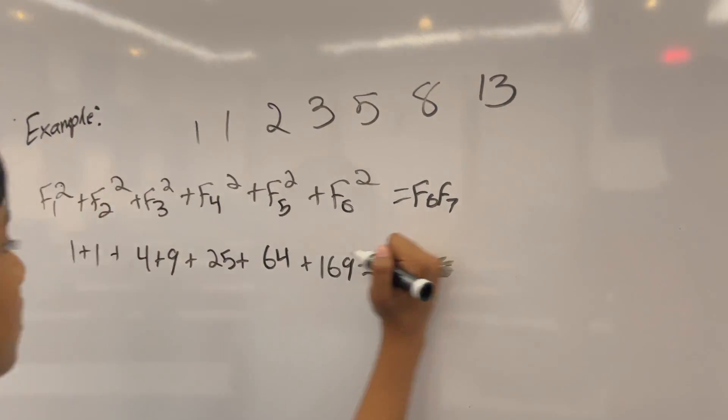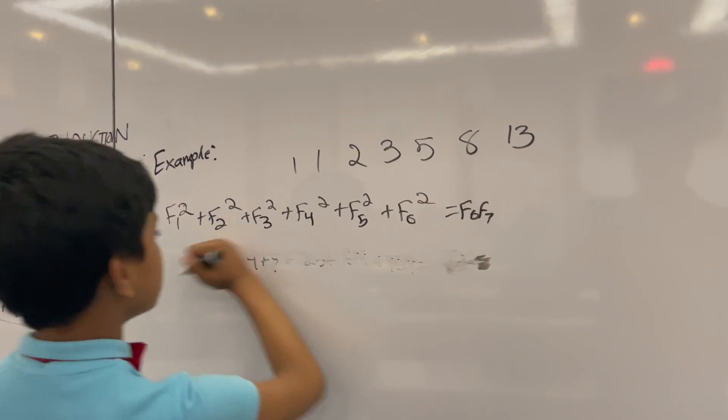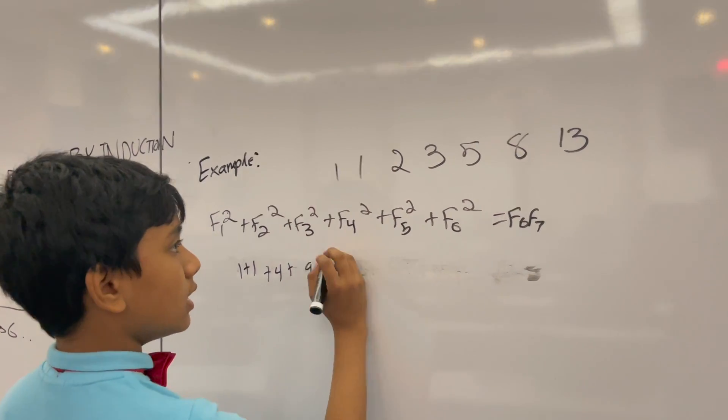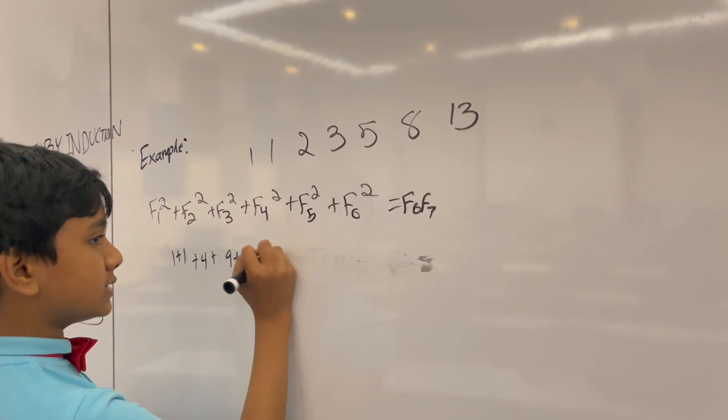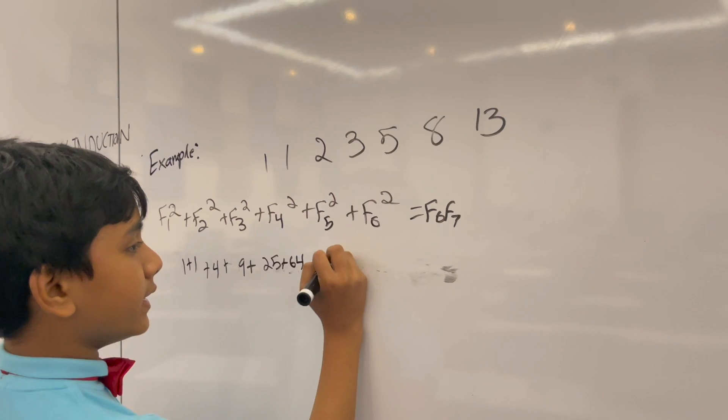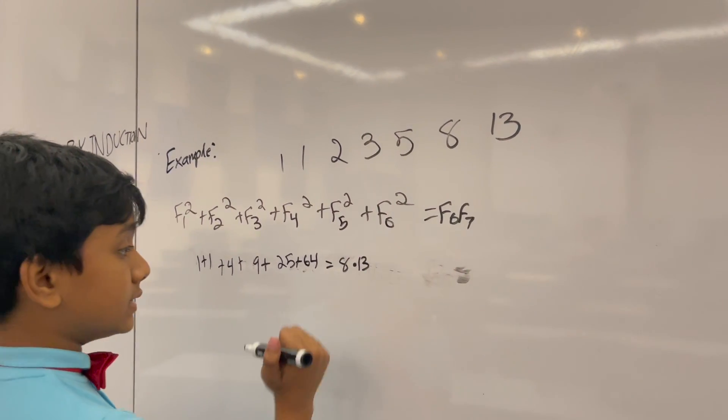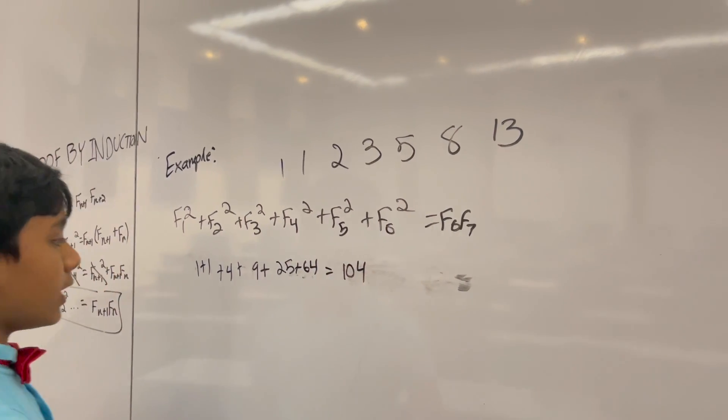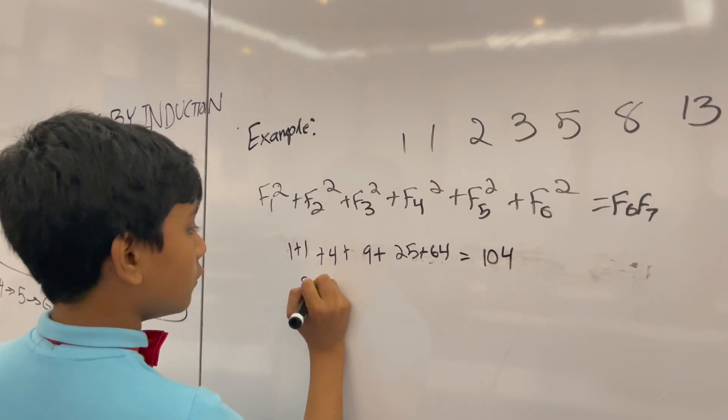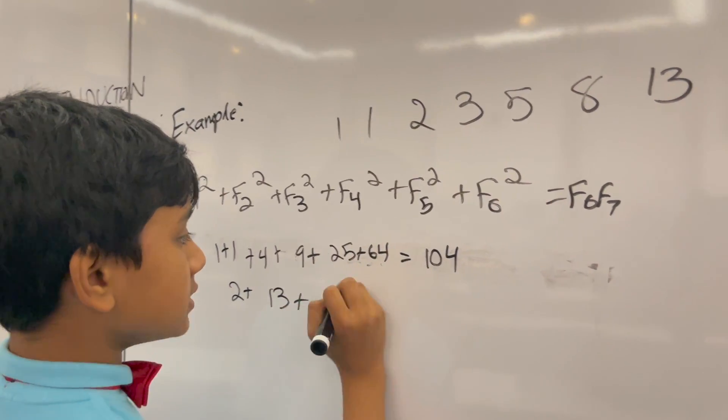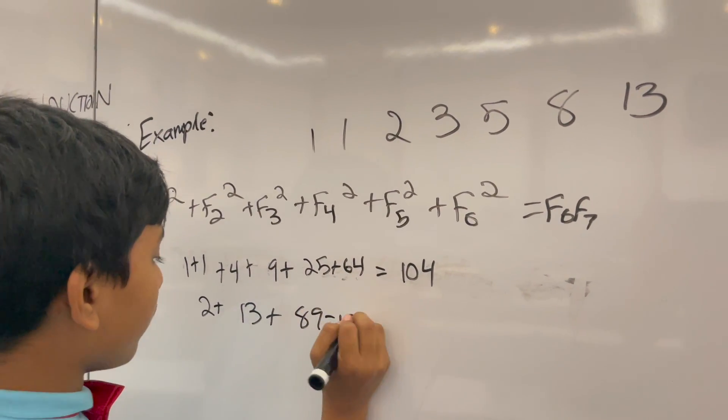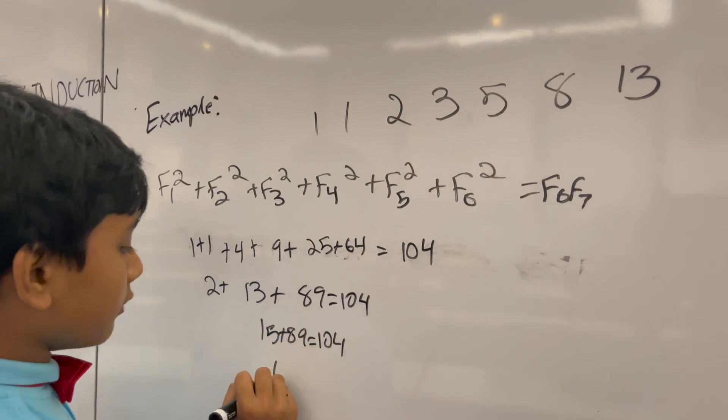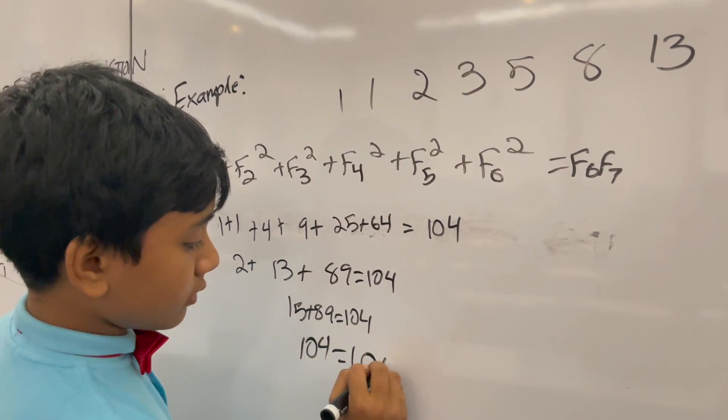Wait, no. I think I skipped something. 1 plus 1 plus 4 plus 9 plus 25 plus 64 equals 8 times 13, which I'm pretty sure is equal to 104. So what do we have? We have 2 plus 13 plus 89 equals 104. So 15 plus 89 is 104. So 104 equals 104. So we proved it.